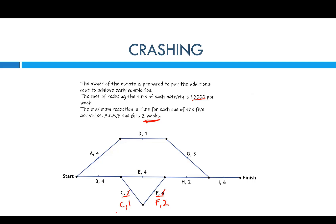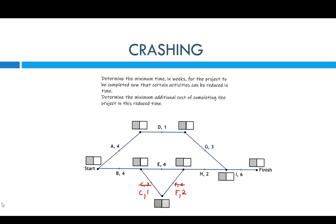So now we're going to do forward scanning and backward scanning again to get a new completion time. We're crashing activities on the previous critical path — C and F by two each. Starting at zero, going to four, plus one is five. Over here, four plus two is six, but going the other way gives eight — so we take the longest, which is eight. Then eight plus two is ten, and ten plus six is sixteen.